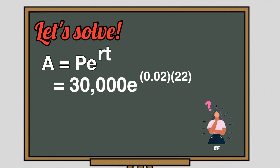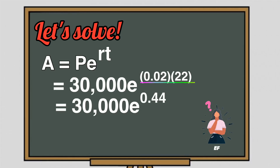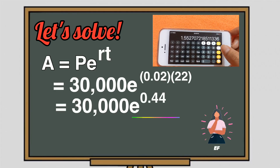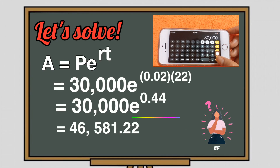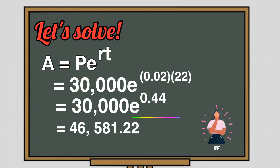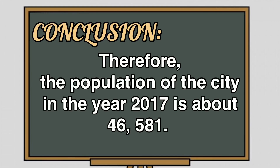We can easily get the answer if we use a scientific calculator. However, if you're using a basic calculator or a calculator on your cell phone, follow these steps. Start with multiplying the exponents of E: 0.02 times 22, that is equal to 0.44. So we have A equals 30,000 times E raised to 0.44. Next, compute E raised to 0.44 and multiply the result by 30,000. Thus, A is equal to 46,581. Remember to disregard the numbers after the decimal point because we are talking about the number of people. Therefore, the population of the city in the year 2017 is about 46,581.